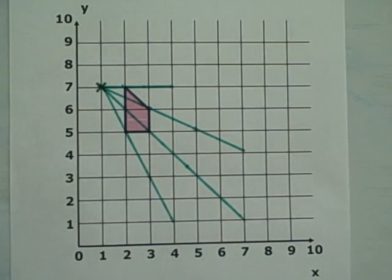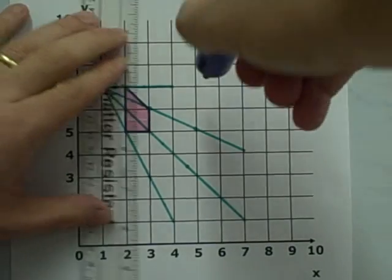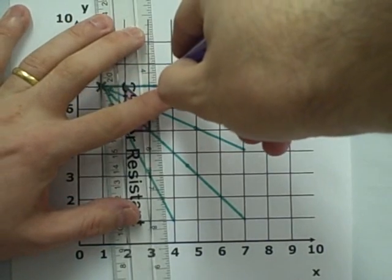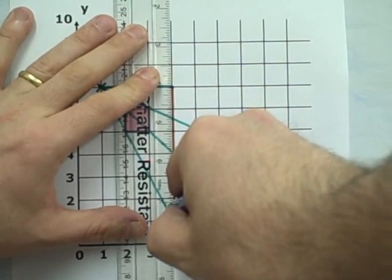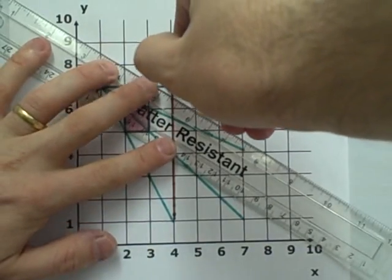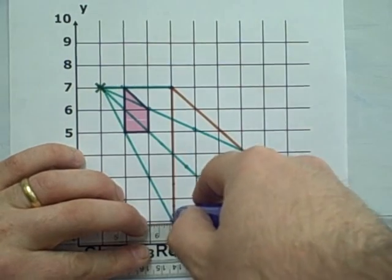Now we've done all of the guidelines, we can actually construct the shape by joining the points together. And here is our completed shape.